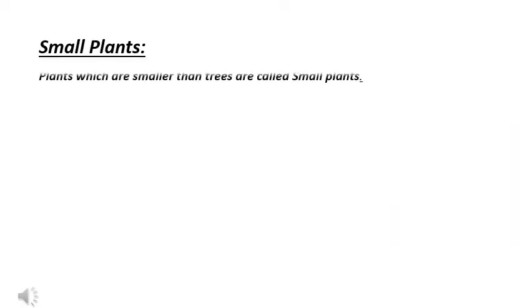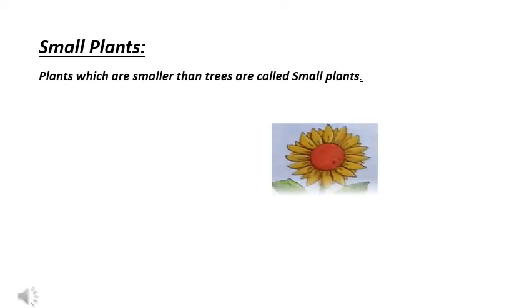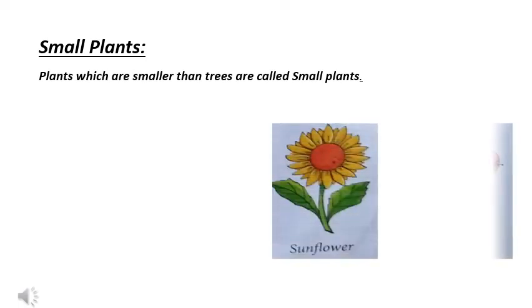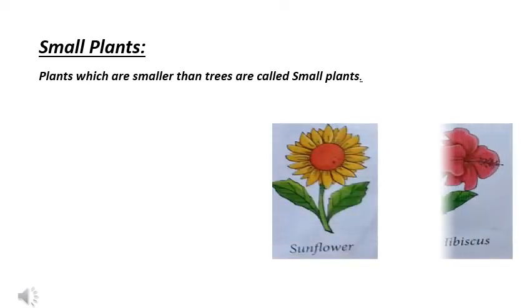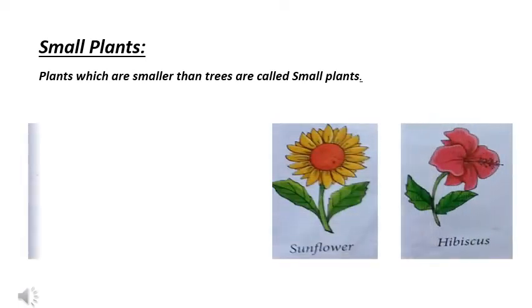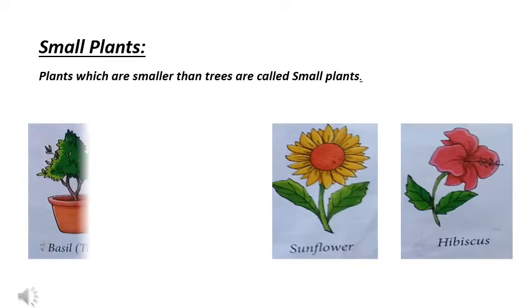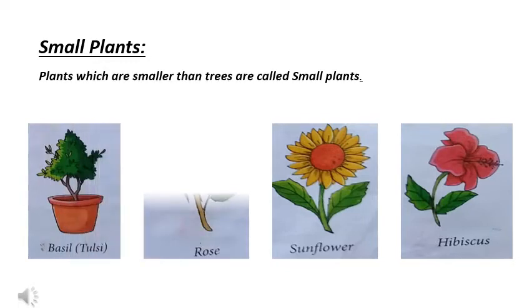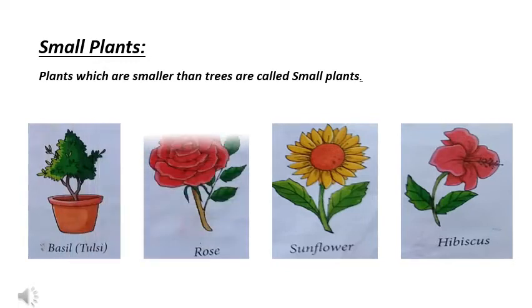Now, we will discuss small plants. Plants which are smaller than trees are called small plants. For example, tulsi, rose, sunflower, hibiscus.